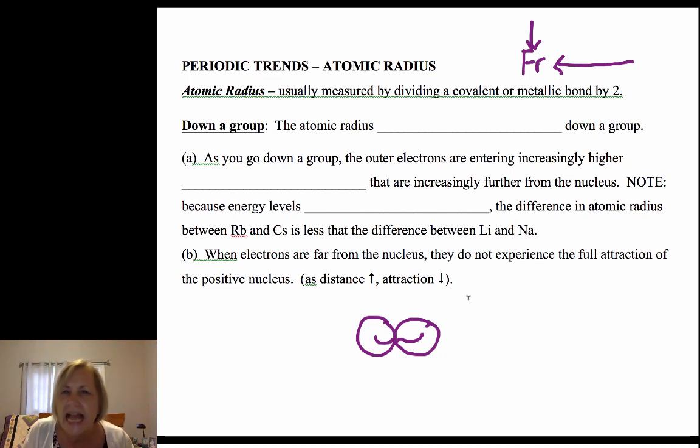What you're going to do is measure a metallic bond or a covalent bond, and you're going to take half of that. Half of that is going to give you the radius of the atom.